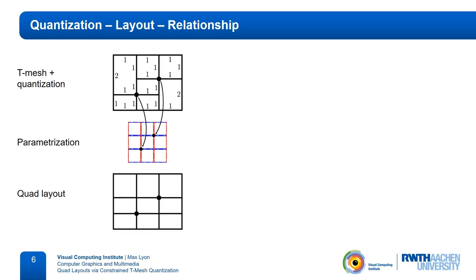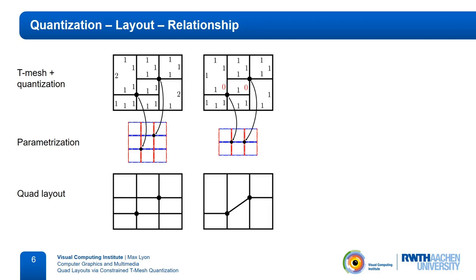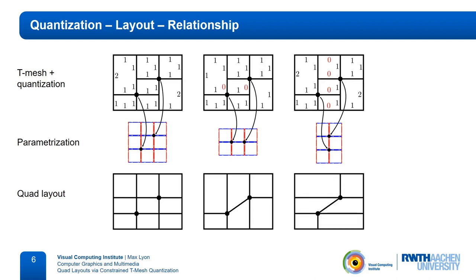We can go coarser than this by assigning zero lengths to some arcs. If these two arcs are quantized to zero, the two layout vertices lie on the same grid line in the parameterization domain. Thus, they are connected by an edge in the quad layout. Alternatively, we can assign zero lengths to these arcs. Then, the vertices will now lie on the same vertical line in the parameterization, resulting in a slightly different layout.